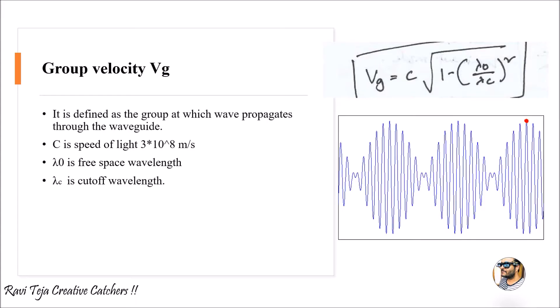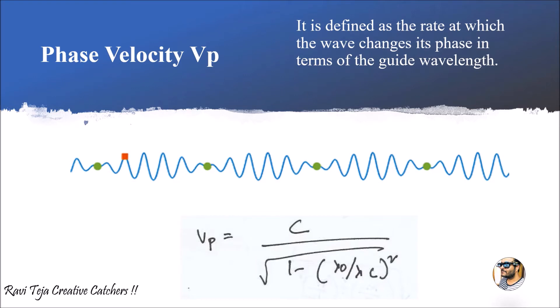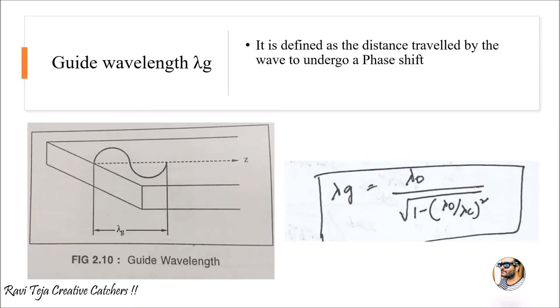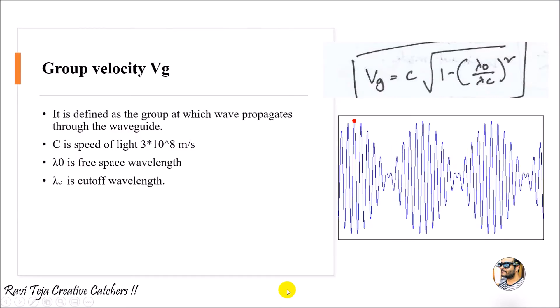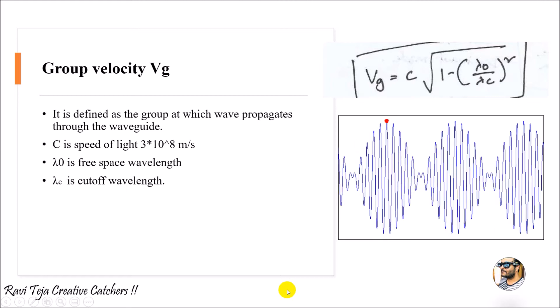Hello everyone, welcome to the course of microwave engineering. In today's class we are going to learn about group velocity, phase velocity, and guide wavelength. Group velocity is denoted by vg.